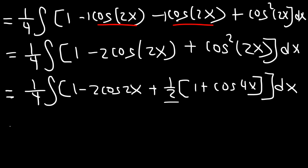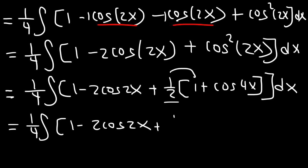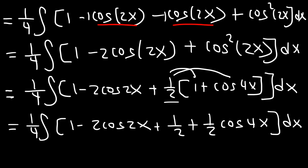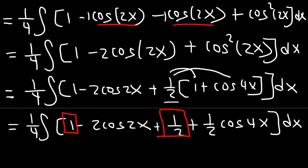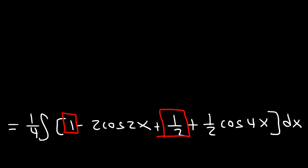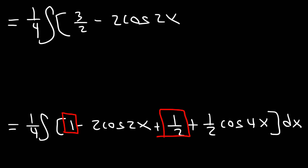Everything else stays the same — just cosine squared changes — so it becomes plus one half times (1 plus cosine 4x). Let's distribute the one half: one half times 1 is one half, and one half times cosine 4x is one half cosine 4x. Now let's combine 1 and one half: 1 is 2 over 2, so 2 over 2 plus 1 over 2 is 3 over 2. This gives us one fourth times the integral of 3 over 2 minus 2 cosine 2x plus one half cosine 4x.